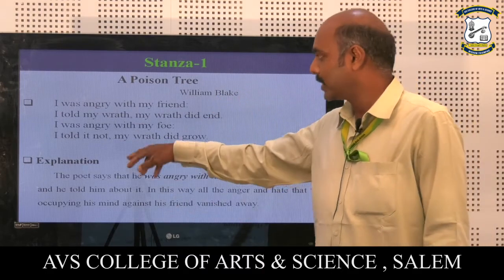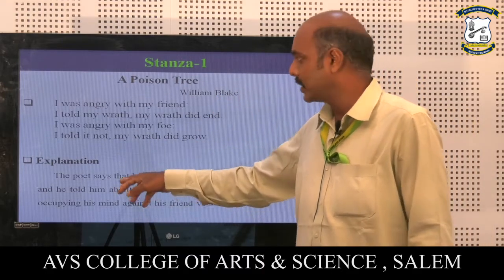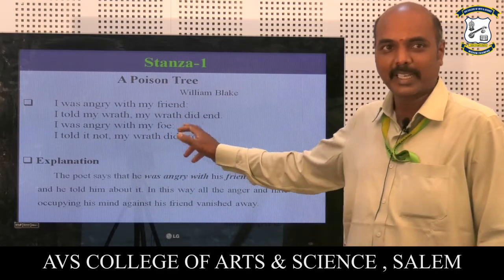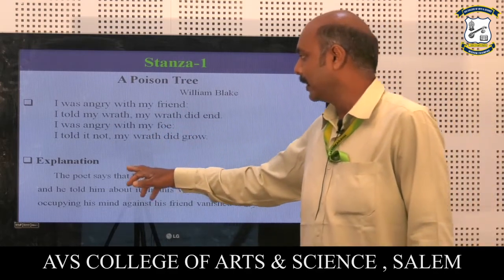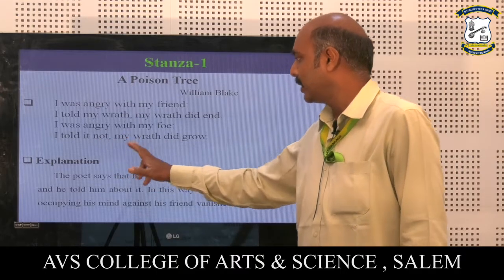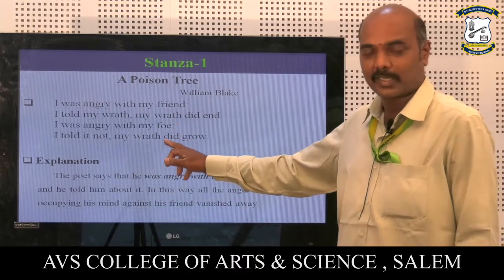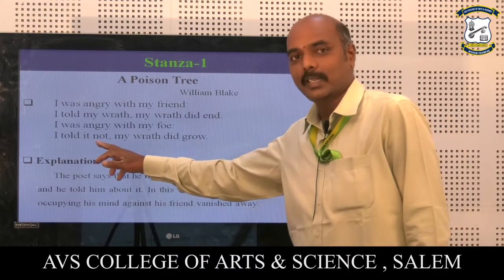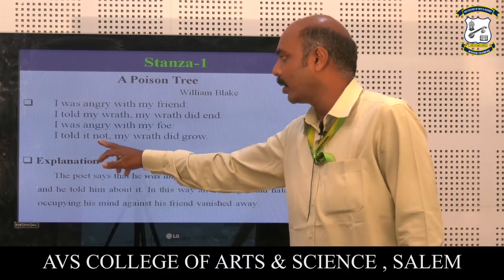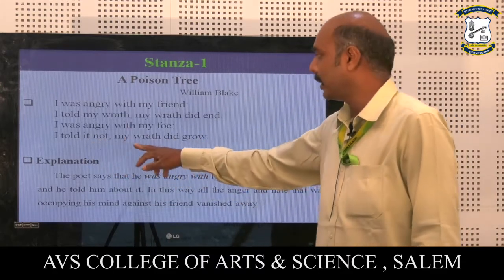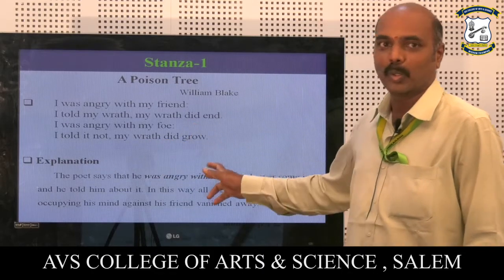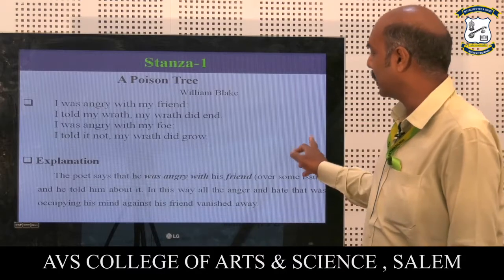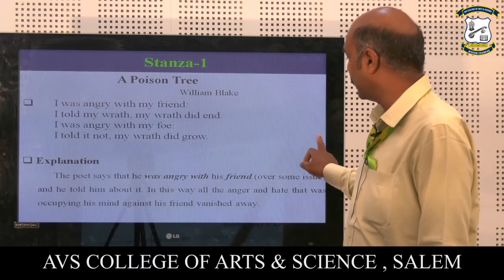In the next two lines, the speaker says: 'I was angry with my foe' — foe meaning enemy — but here the speaker does not share his feeling with the foe. He says 'I told it not,' meaning he does not share. As a result, 'my wrath did grow' — the anger keeps on growing.